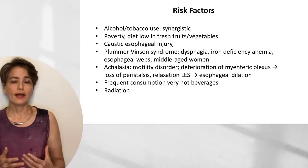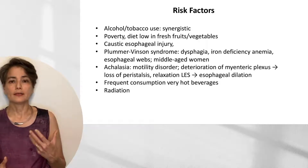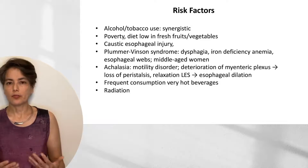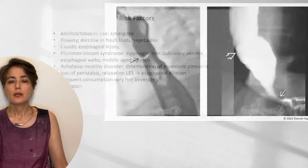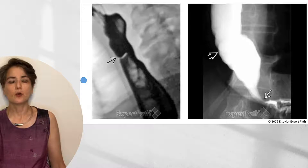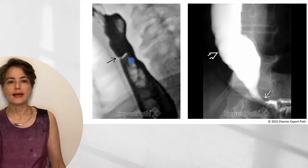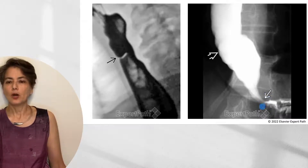Frequent consumption of very hot beverages is a risk factor — really hot — which may account for some of the higher incidence in countries where very hot tea or coffee is consumed. Radiation, perhaps for thoracic malignancy, is also associated with increased risk. Achalasia shows the classic bird's beak deformity on imaging: the lower esophageal sphincter is very narrow as it can't open, and there is dilation upstream. Perhaps exposure to toxins in stagnant food also increases risk of squamous cell carcinoma.